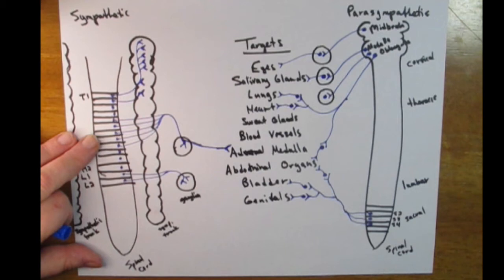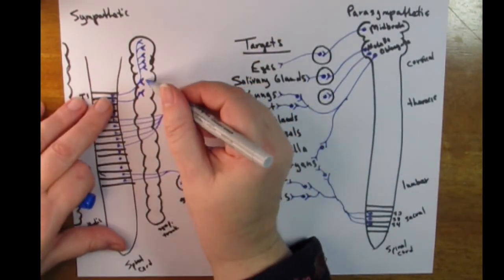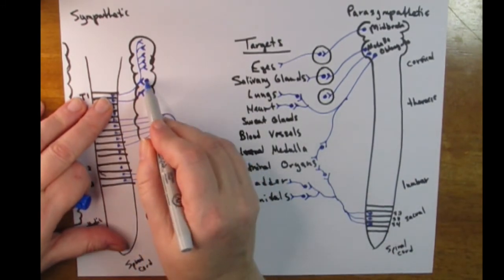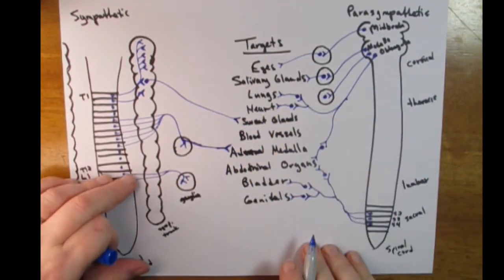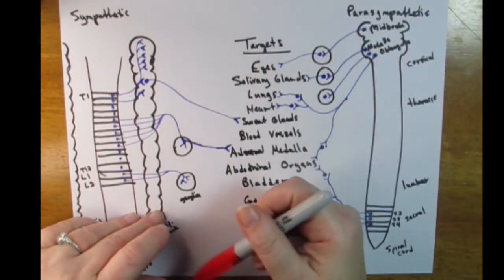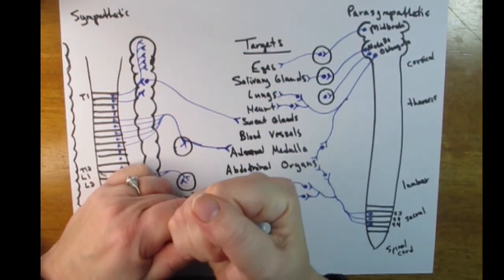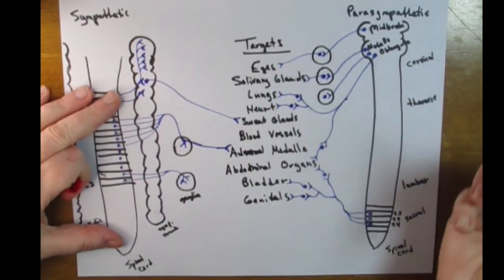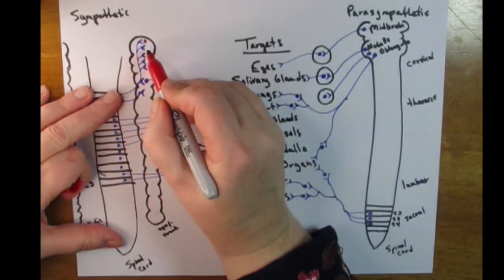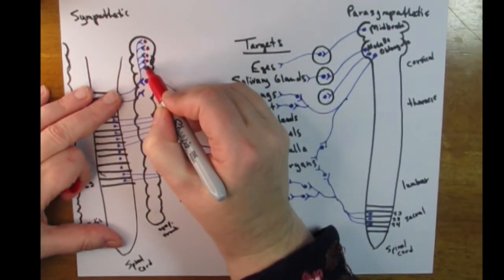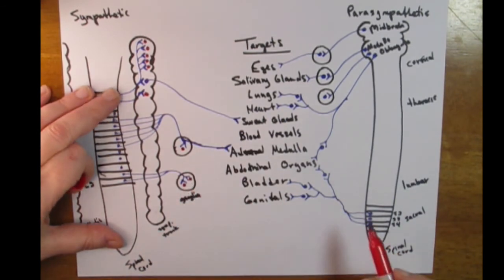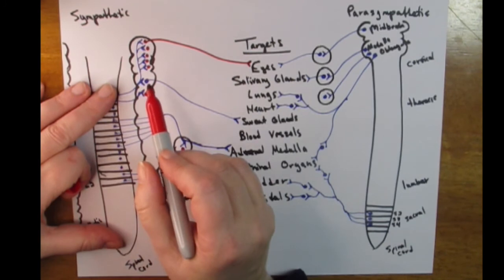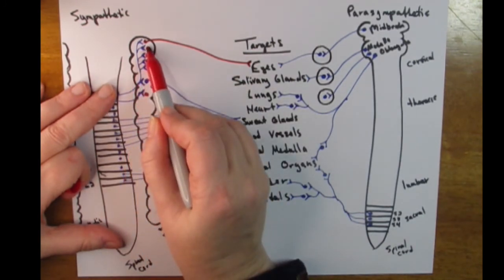Even the ones that do not appear to have a ganglion will have a very small ganglion very close to the target organ. On the sympathetic side, we draw one cell body in blue — there is one postganglionic neuron that goes directly from the sympathetic trunk to the sweat glands, and it stays blue. But the rest of the postganglionic neurons on the sympathetic side are drawn in red. The preganglionic neurons on the sympathetic side are blue; the postganglionic neurons are mostly red, with the exception of the one leading to the sweat glands.